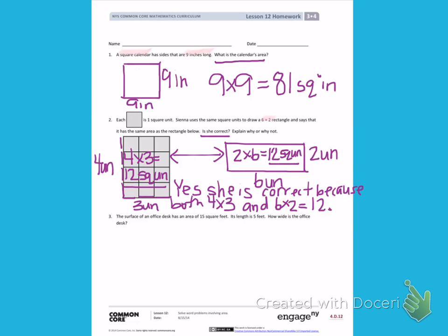The surface of an office desk has an area of 15 square feet. Its length is 5 feet. How wide is the office desk? So, I know that I have an area of 15 square feet and a length of 5 feet. So, to start, I'm going to draw the length and label it as 5 feet. Then, I'm going to estimate the rest of the rectangle and label the area as 15 square feet.